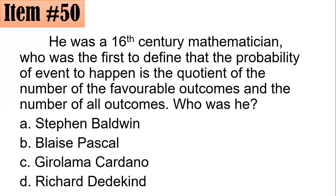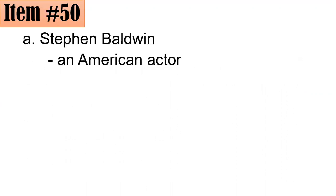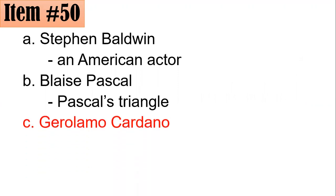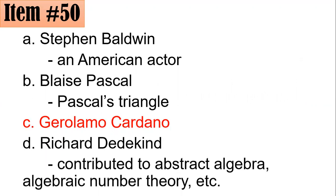Let's have one more item, number 50. A 16th-century mathematician was the first to define that the probability of events is the quotient of favorable outcomes over all outcomes. Is it Stephen Baldwin, Blaise Pascal, Girolamo Cardano, or Richard Dedekind? Stephen Baldwin is an American actor. Blaise Pascal is famous for Pascal's Triangle. Richard Dedekind contributed to abstract algebra and is known for the Dedekind cut. The correct answer is Girolamo Cardano, letter C.